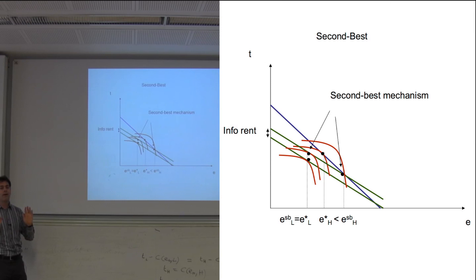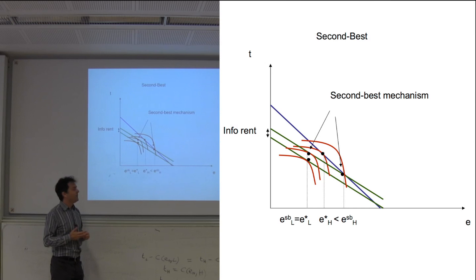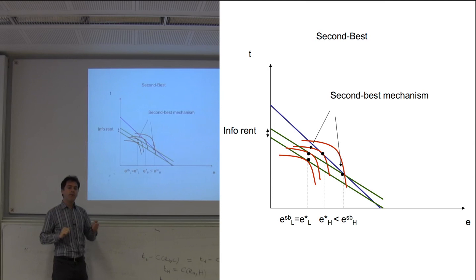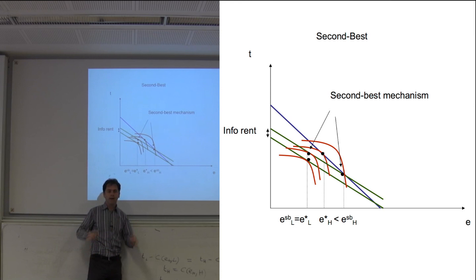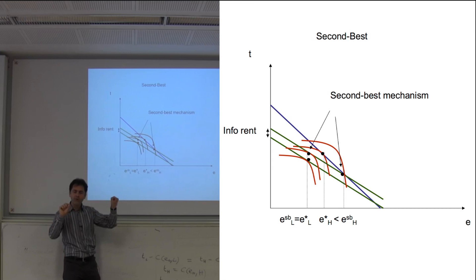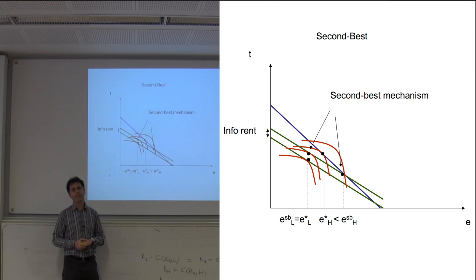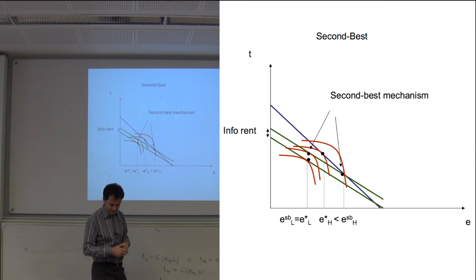This is simple because there are only two types. In reality you can have a continuum of types, and the model generalizes. The intuition is the same: no distortion at the top for the most efficient firm, no rent for the least efficient firm, and distortion for all intermediate firms except the top. The math becomes more complex — requiring integration by parts.